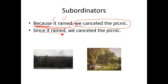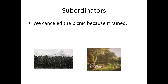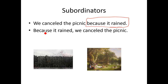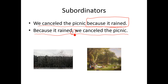Since it rained, we canceled the picnic. In this case, 'since' shows the cause and effect relationship. It's followed by a subject and verb, and then we have the main clause: we canceled the picnic. I can also put the subordinator at the end of the sentence, and in that situation, no comma is necessary. For example: we canceled the picnic because it rained — no comma. But 'because it rained, we canceled the picnic' requires a comma when 'because' is at the beginning.